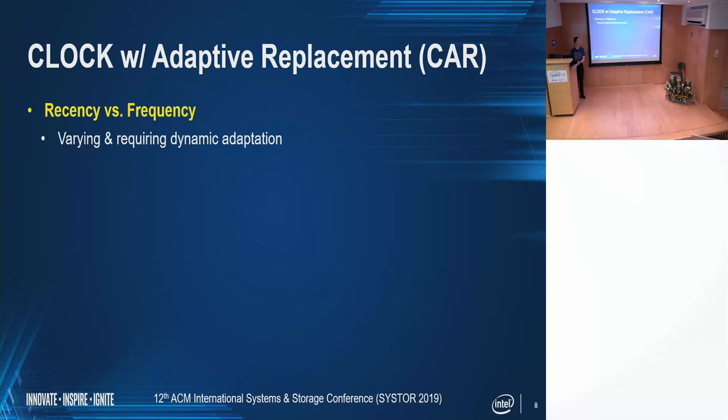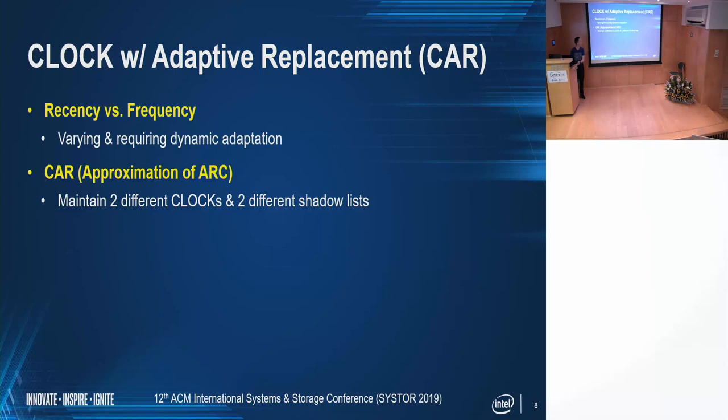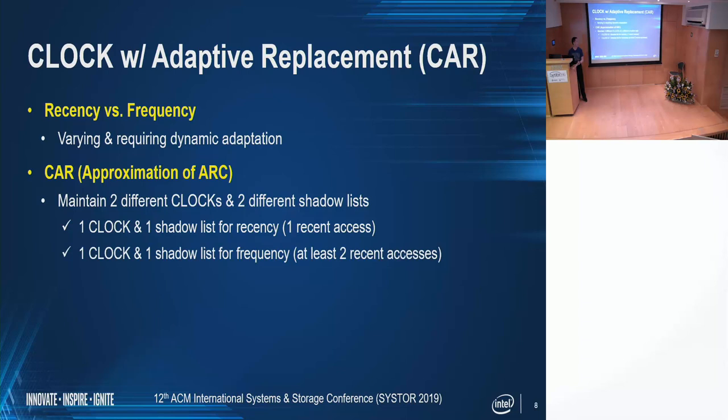CLOCK with Adaptive Replacement, or CAR, is another state-of-the-art policy. It argues that recency and frequency are two factors varying and requiring dynamic adaptation. As an approximation of the ARC policy, CAR maintains two different clocks and two shadow lists: one clock and one shadow list for recency (pages with one recent access), and another clock and shadow list for frequency (pages with at least two recent accesses). It performs utility-driven adaptation to dynamically adjust the size of the two clocks.